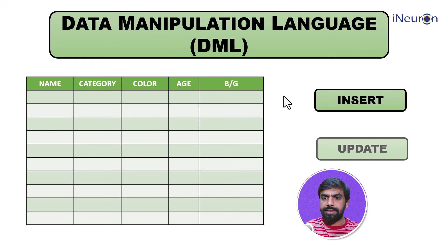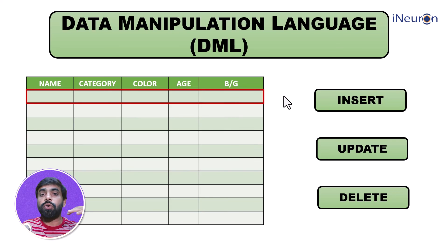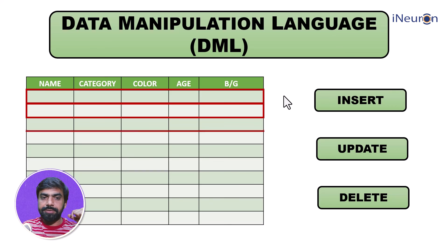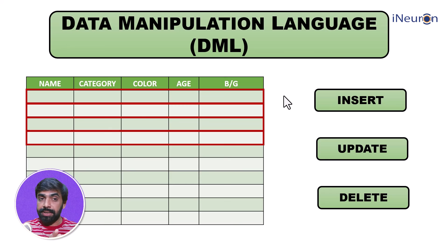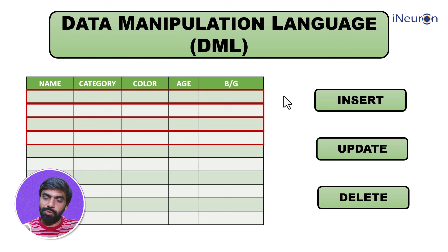We'll use these commands when we actually run SQL and see how they work on a database. Please note that DML commands operate at the row level — we are inserting, updating, or deleting rows. In contrast, DDL commands deal mainly with columns — creating columns, dropping columns, altering columns, and truncating the entire database. So remember: DDL is related to columns, and DML is related to rows.